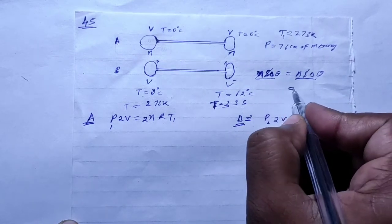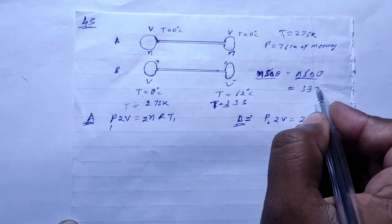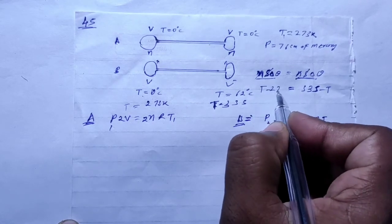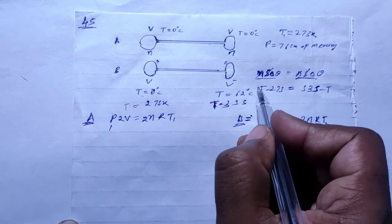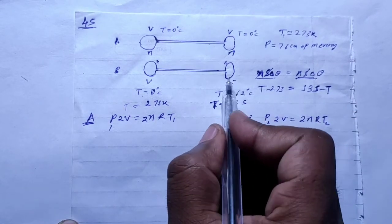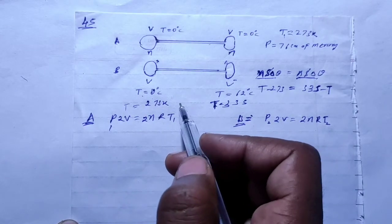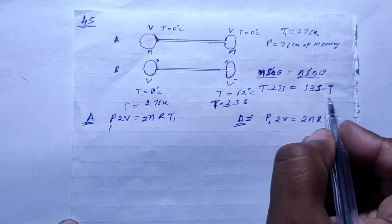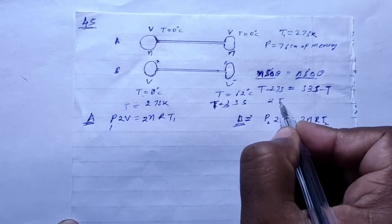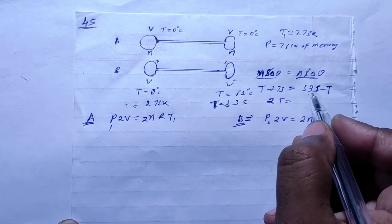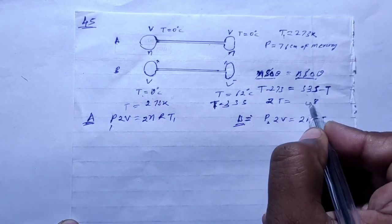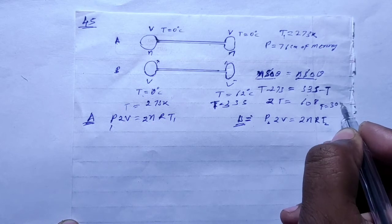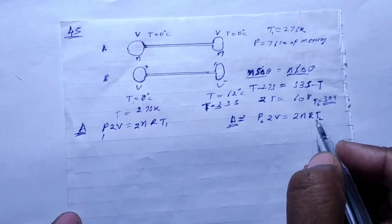The change in temperature for one bulb is (335 minus T) and for the other is (T minus 273). Setting these equal since the number of moles is the same, we solve: T equals (335 plus 273) divided by 2, giving T equals 608 divided by 2, so T2 equals 304 Kelvin.